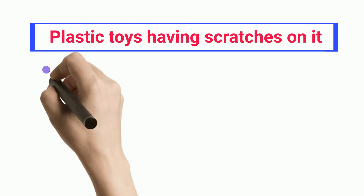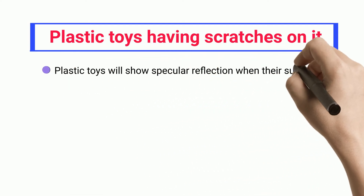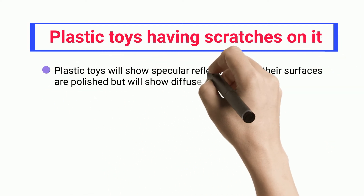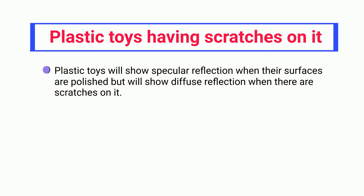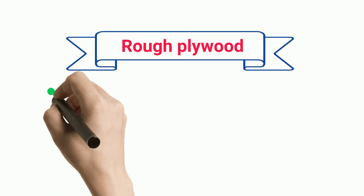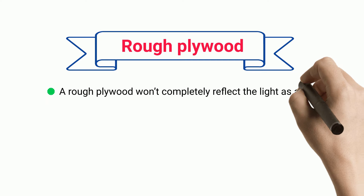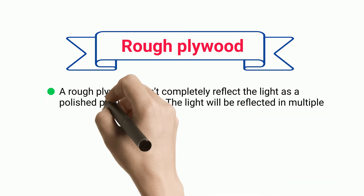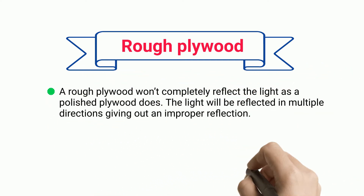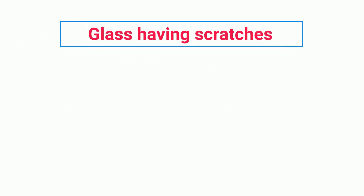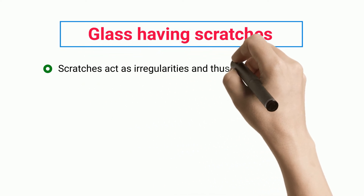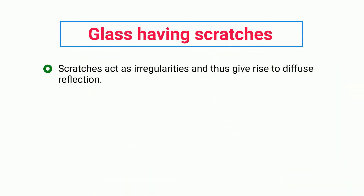Plastic toys having scratches: plastic toys will show specular reflection when their surfaces are polished, but will show diffuse reflection when there are scratches on them. Rough plywood: a rough plywood won't completely reflect the light as a polished plywood does — the light will be reflected in multiple directions, giving out an improper reflection. Glass having scratches: scratches act as irregularities and thus give rise to diffuse reflection.